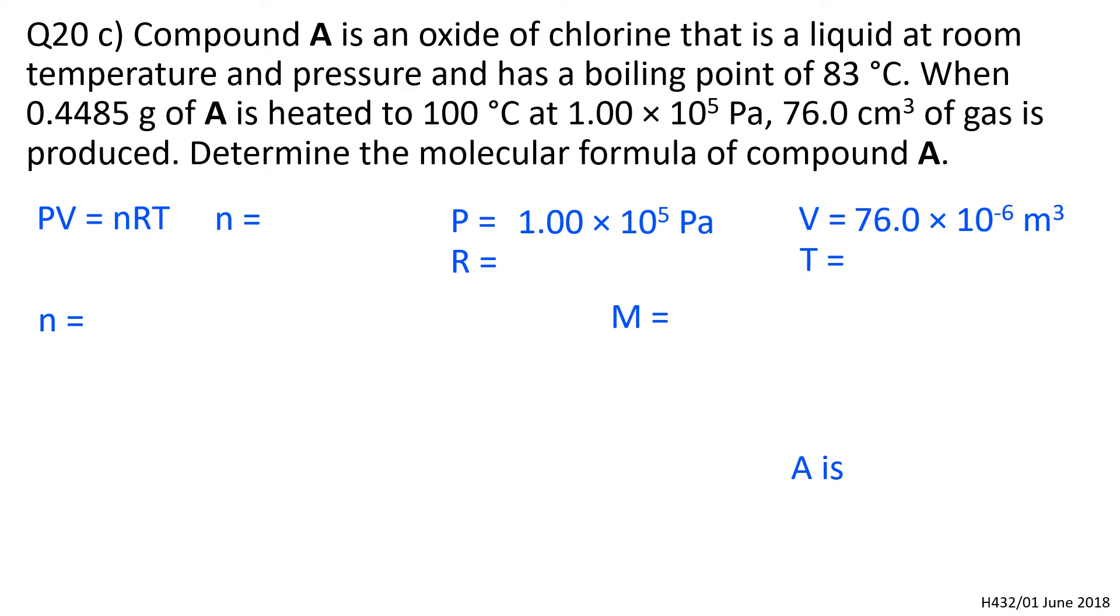Pressure - lift that straight from the question. Volume - divide by 1 million to get to meters cubed from centimeters cubed, so that's 10⁻⁶. R is 8.314, and T equals 373 Kelvin.